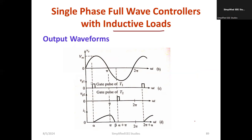Vm represents the input voltage. Vg1 is the gating pulse for T1, and Vg2 is the gating pulse for T2. Whenever you provide the gating pulse to T1, the device turns on at a firing angle of alpha. But when Vs reaches pi, the output current will not fall at that particular point, because both current and voltage are not in the same phase — there is still a delay and the current is lagging.